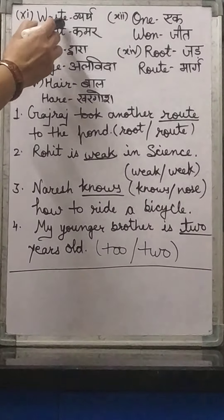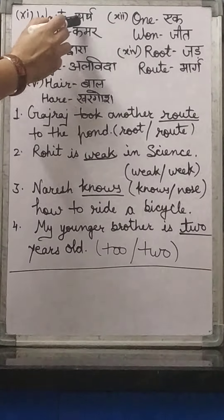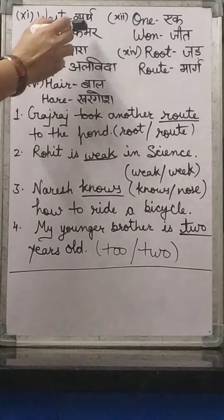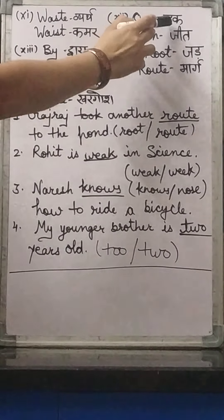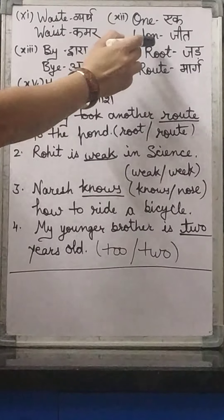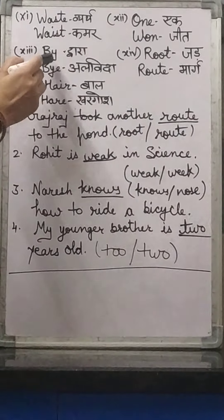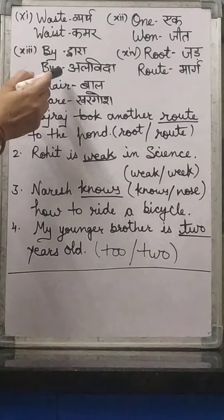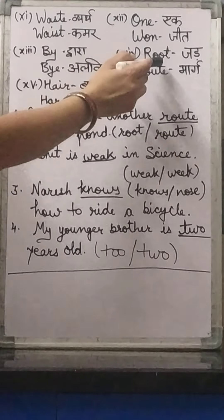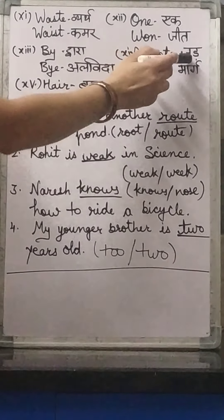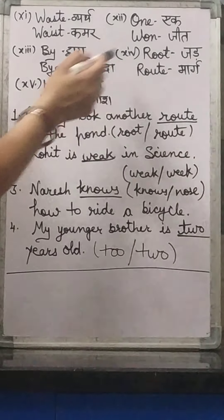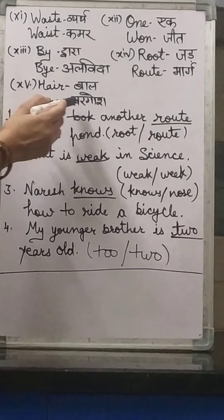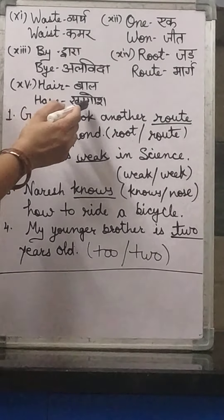Next: W-A-S-T-E means 'waste' (barbaad karna), and W-A-I-S-T means 'waist' (kamar). O-N-E means 'one' (ek), and W-O-N means 'won' (jeeta). B-Y means 'by' (dwara), and B-Y-E means 'bye' (alvida). R-O-U-T-E means 'route' (rasta), and R-O-O-T means 'root' (jad). H-A-I-R means 'hair' (baal), and H-A-R-E means 'hare' (khargosh).